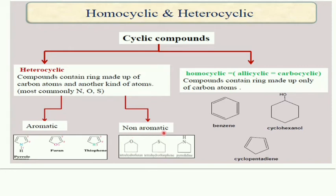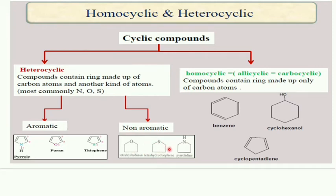Non-aromatic heterocyclic compounds are also heterocyclic but not aromatic — there are no double bonds. These are hydrogenated compounds of the aromatic heterocyclic compounds. Examples include tetrahydrofuran, tetrahydrothiophene, and pyrrolidine.